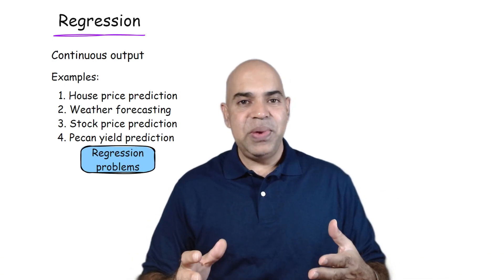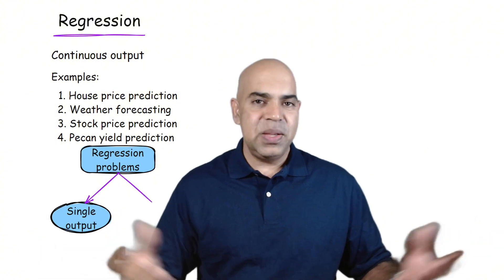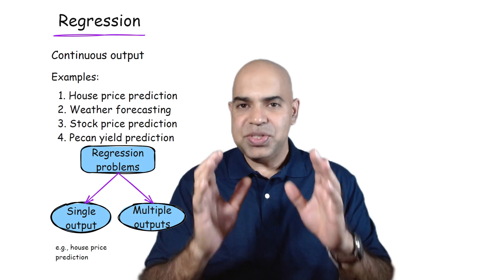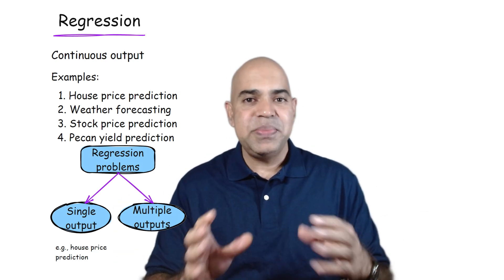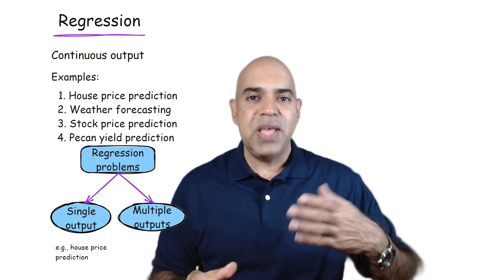In regression problems, the target variable can be just one output or multiple outputs. So when we try to predict house price, we are predicting just one single output. In some cases, these regression problems may involve predicting multiple real valued outputs at once.